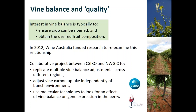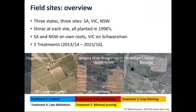Most of the work I'm going to talk about is the field sites and the field work that we were doing. We set up three field sites, one in each of three states. All of these have Shiraz as the scion, they were all planted in the 1990s - two on their own roots and the third on Schwarzman. Those three were Clegett Wines down in Langhorne Creek, Wingara Wine Group's Deakin Estate in Sunraysia in Victoria, and McWilliams Wines Barwang Vineyard in New South Wales Hilltops.